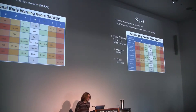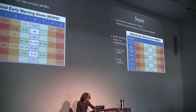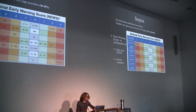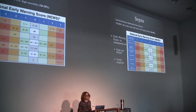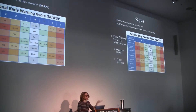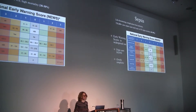One of the problems with this score system is that it results in a lot of false alarms. At Duke, the NEWS score alerts go off constantly, and nurses end up just ignoring them. We want something that gives high precision but doesn't produce too many false alarms, because then people get alarm fatigue.